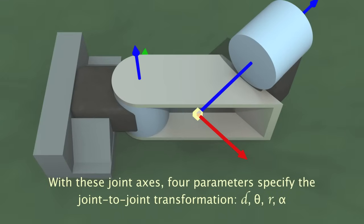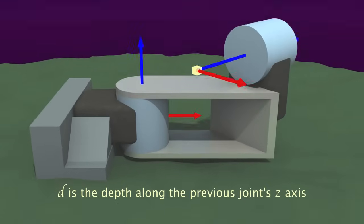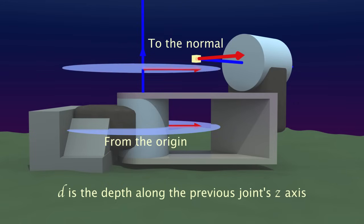Using this protocol for laying out the reference frames, only four parameters are needed. The first of these, d, is the depth along the previous joint z-axis from the origin to the common normal.